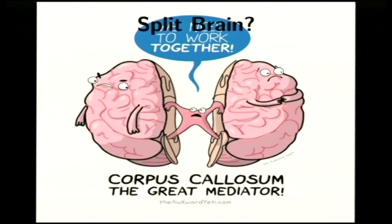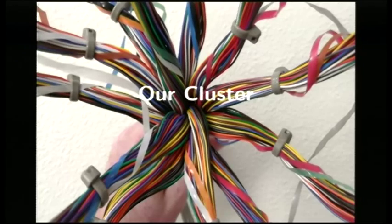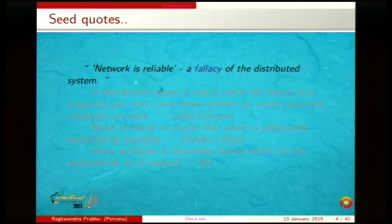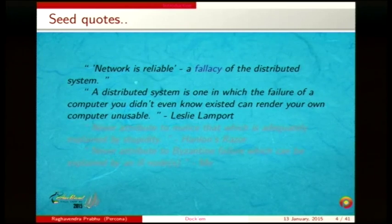This picture was originally used for the Corpus Collapsum concept — it's basically supposed to indicate the corpus callosum, which is the connection between the left and right brain. Absence of it causes split brain, which is a medical condition. I was trying to create an equivalence between the split brain medical condition and what you see in distributed systems.